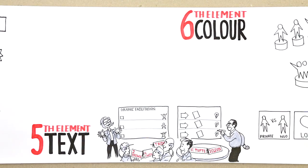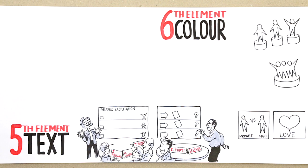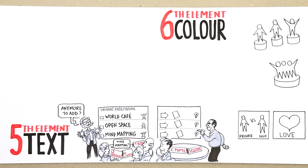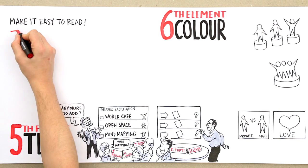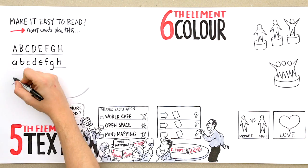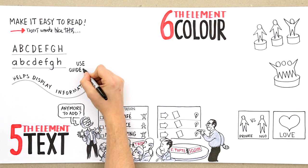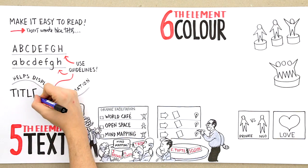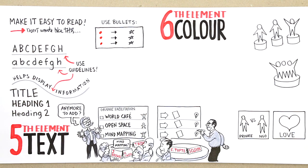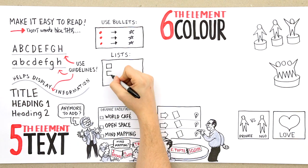Element 5: Text. Writing adds vital information to your drawings, but remember — less is more. Use as few but as precise words as possible. Write clearly and use size, style, shape and colour to indicate meaning and value. Use bullets in different shapes; they help separate information and make lists easier to read.